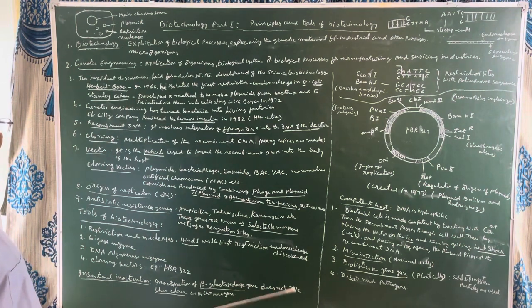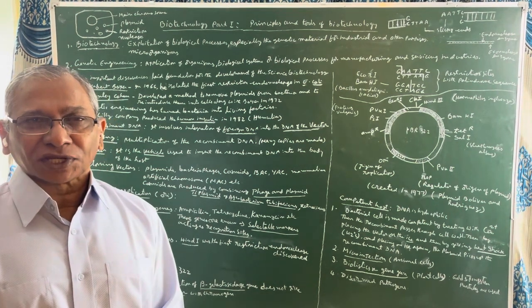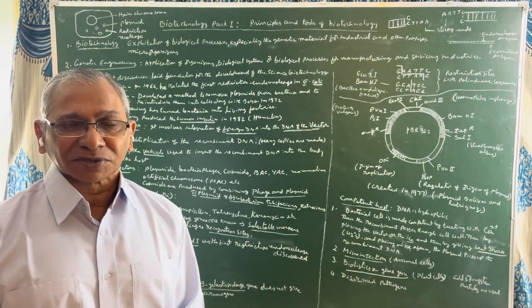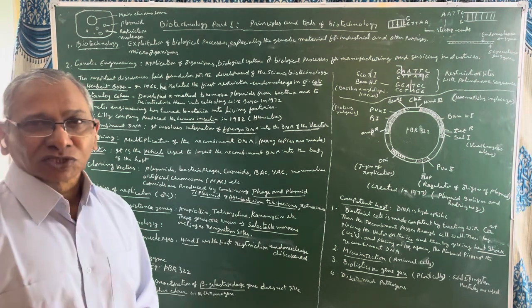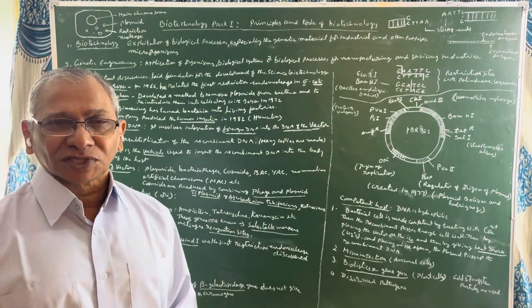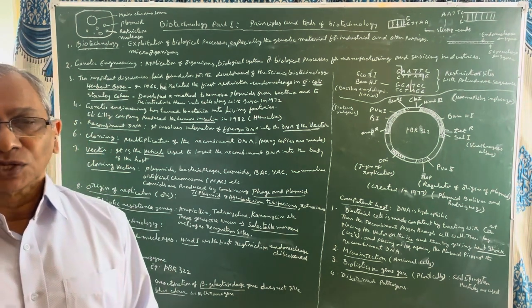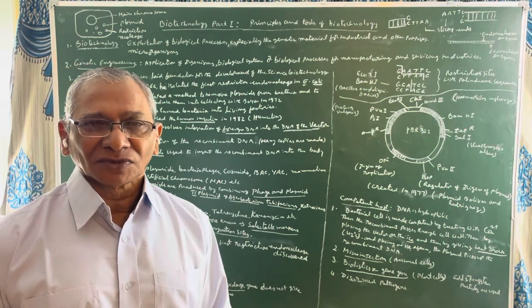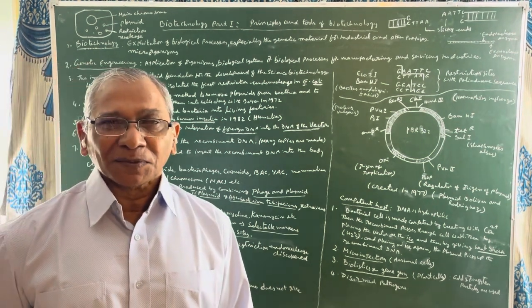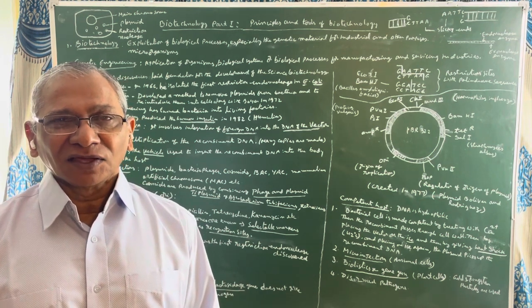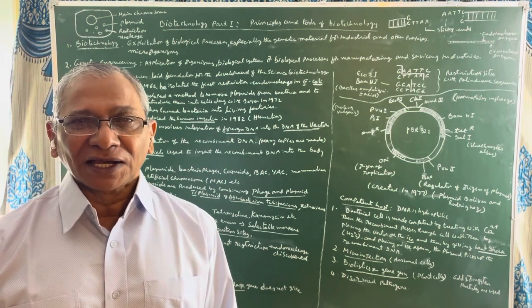The second scientist is Stanley Cohen. He developed a method to remove plasmids from bacteria and then to reintroduce the plasmid into bacteria. Plasmids are small circular DNA molecules present in bacteria. Bacteria have a main chromosome, a bigger circular chromosome, and in addition, small circular DNA molecules known as plasmids. The number of plasmids varies from species to species — from one to ten or even a hundred — and plasmids multiply independently from the main chromosome.